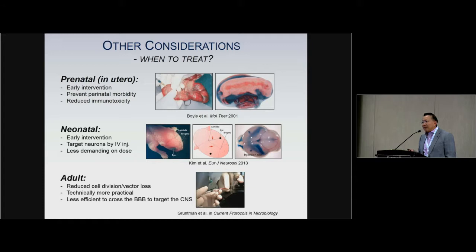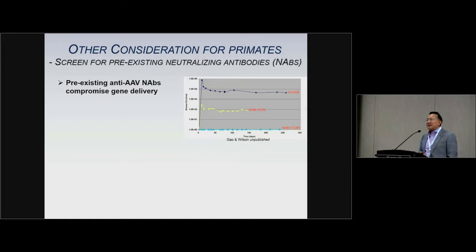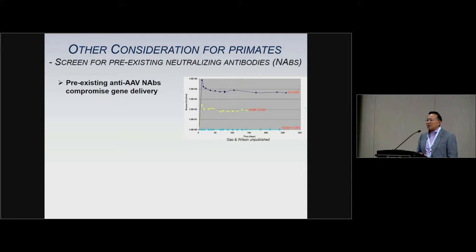In adult animals, cell division has basically stopped, so you have more persistent transduction, though the dose required is higher. One last issue I want to emphasize: when doing AAV serotype selection in non-human primates or primate animals, you really have to think about pre-existing immunity. When you have different titers of pre-existing neutralizing antibody, you have different levels of transduction efficiency. My advice is to please do a pre-screening on neutralizing antibodies, otherwise you will get unexpected results.